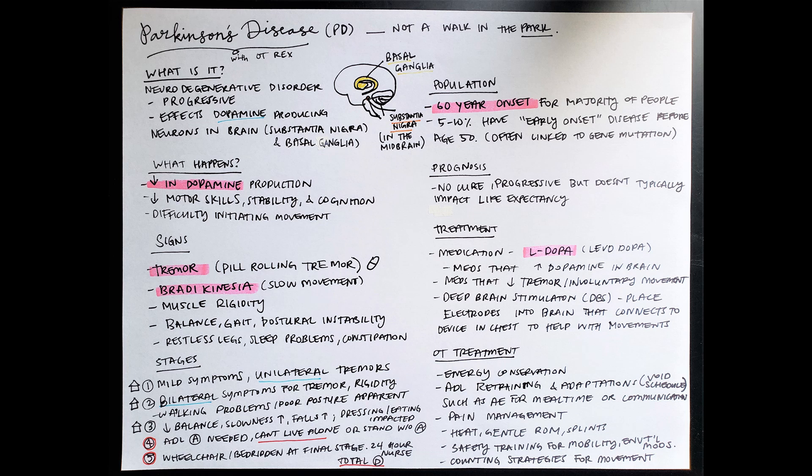The population that Parkinson's disease impacts are older individuals around 55 to 60 years of age. That's typically the onset for majority of people, but five to ten percent have early onset disease before age 50, and this is often linked to a gene mutation, but not always the case. So overall, it's just a random selection of people in their early 60s.